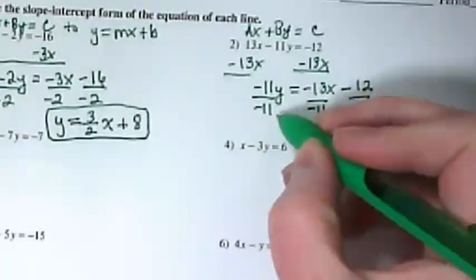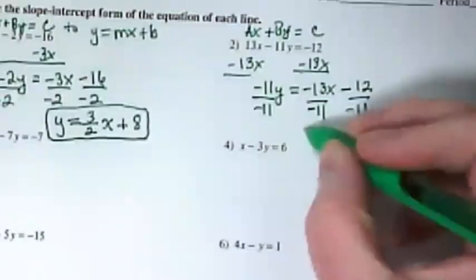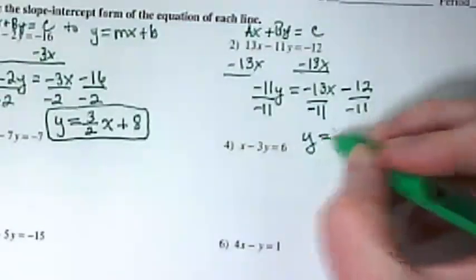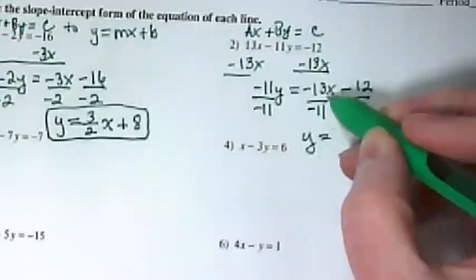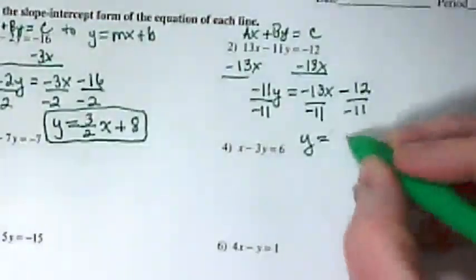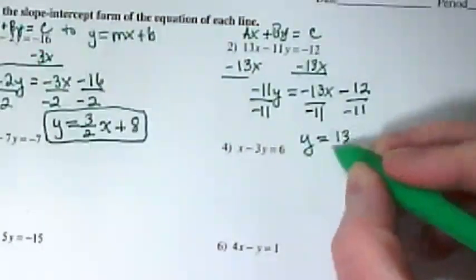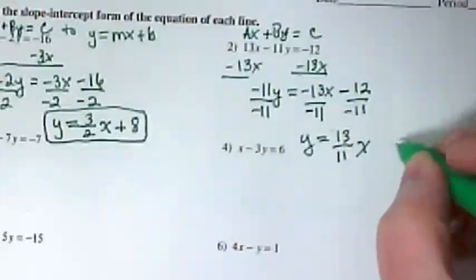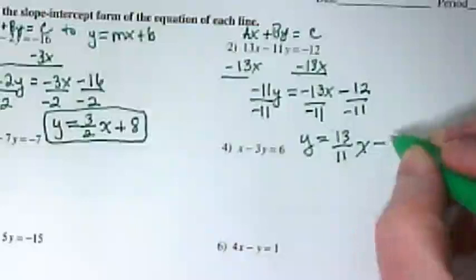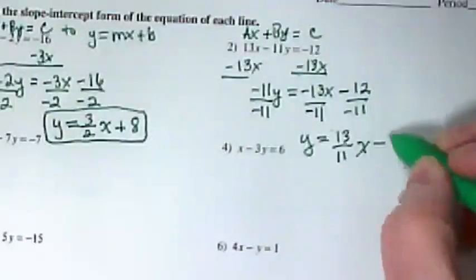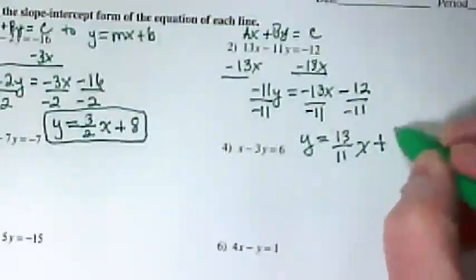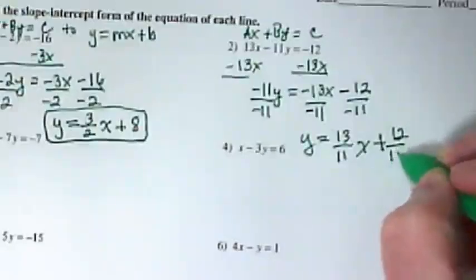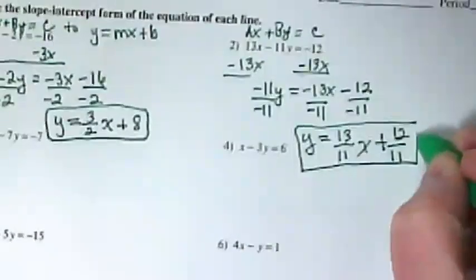So negative 11 over negative 11 gives us y. Negative 13 over negative 11 gives us positive 13 over 11x. Negative 12 over negative 11 gives us positive 12 over 11. And that is our solution.